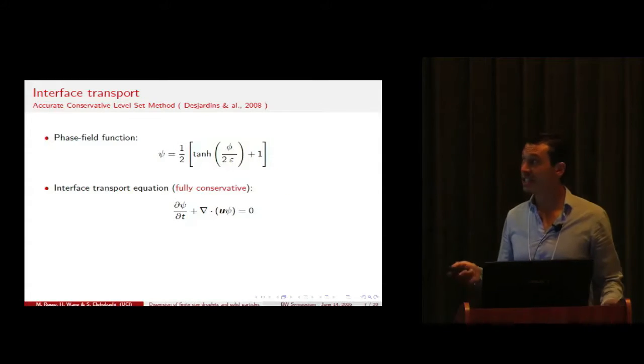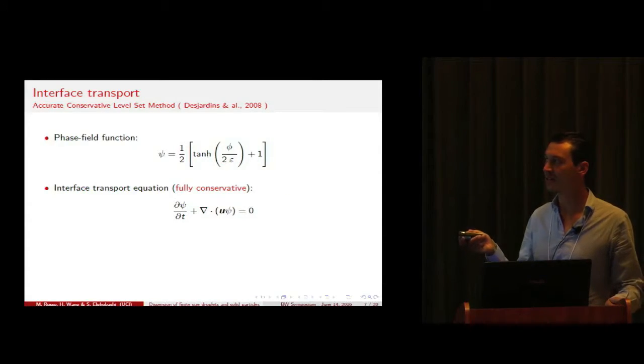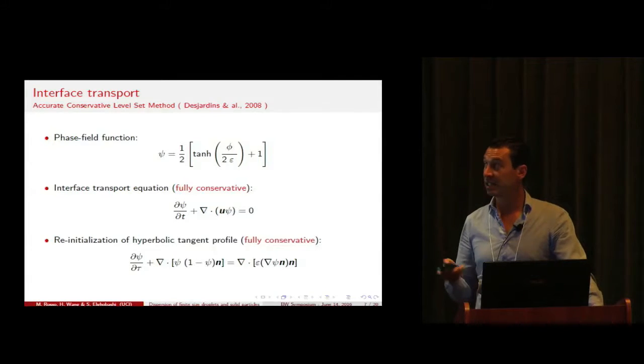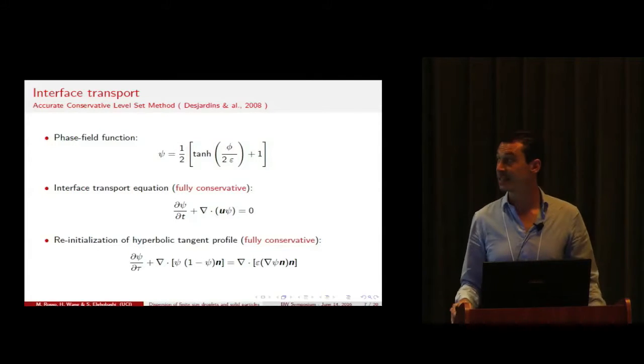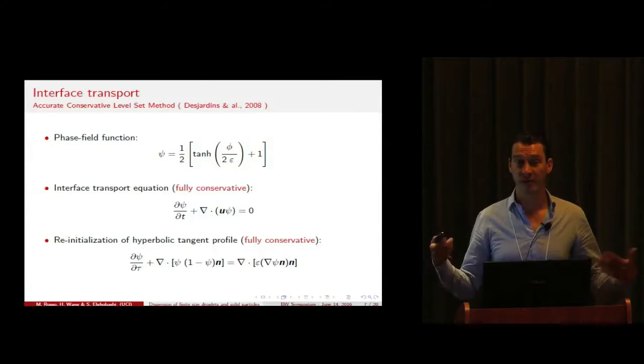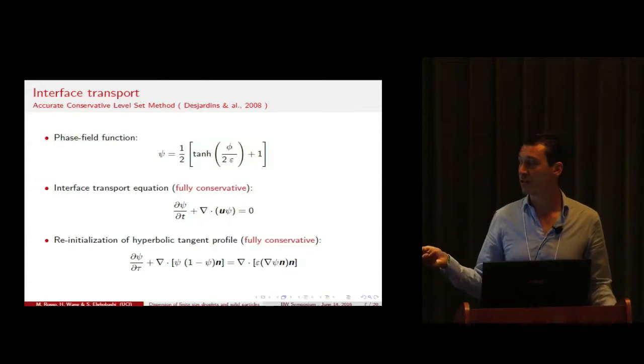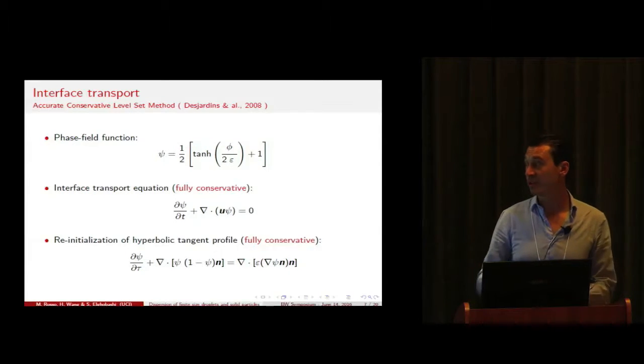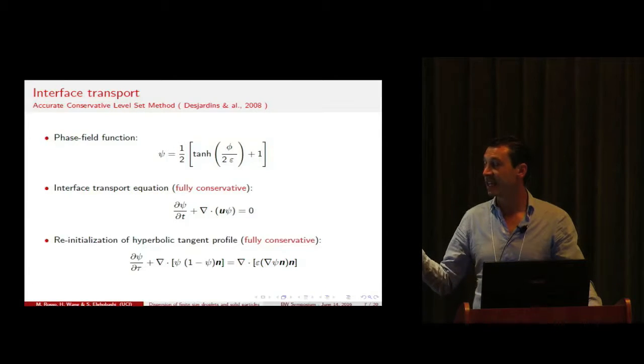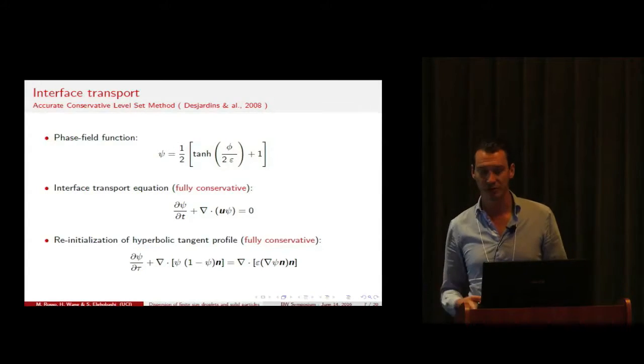The advection is performed by solving an interface transport equation that is written and discretized in a fully conservative fashion. Since this equation correctly advances the interface but disrupts the hyperbolic tangent profile of the phase field function, we are required to solve after the advection step a further equation, the reinitialization, in order to keep the hyperbolic tangent profile smooth at all times. This is written and discretized in a fully conservative fashion.